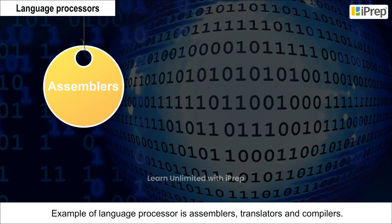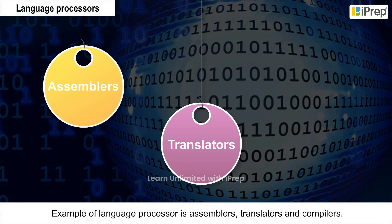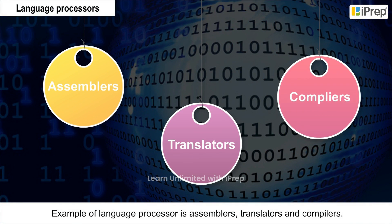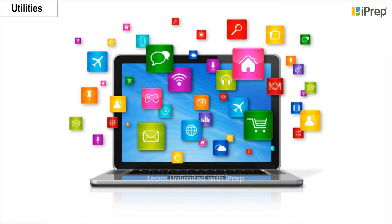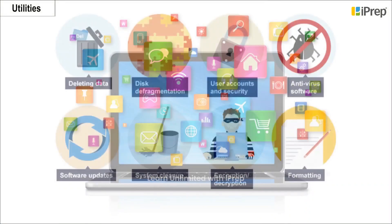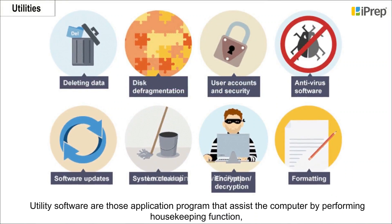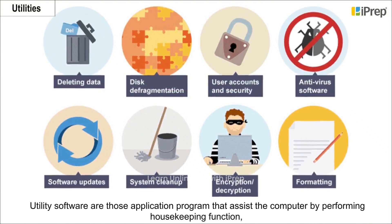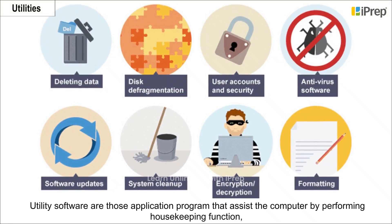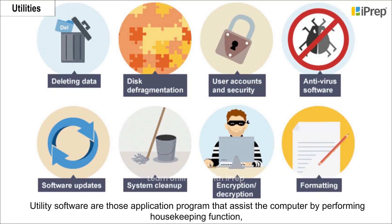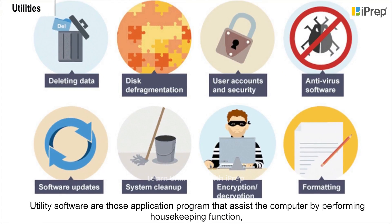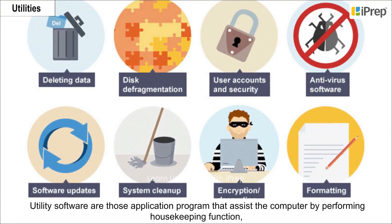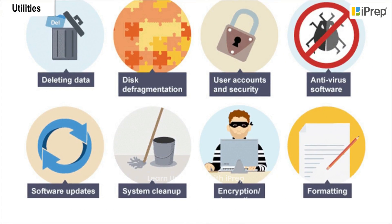Examples of language processors include assemblers, translators, and compilers. Assemblers translate assembly language code into machine code.